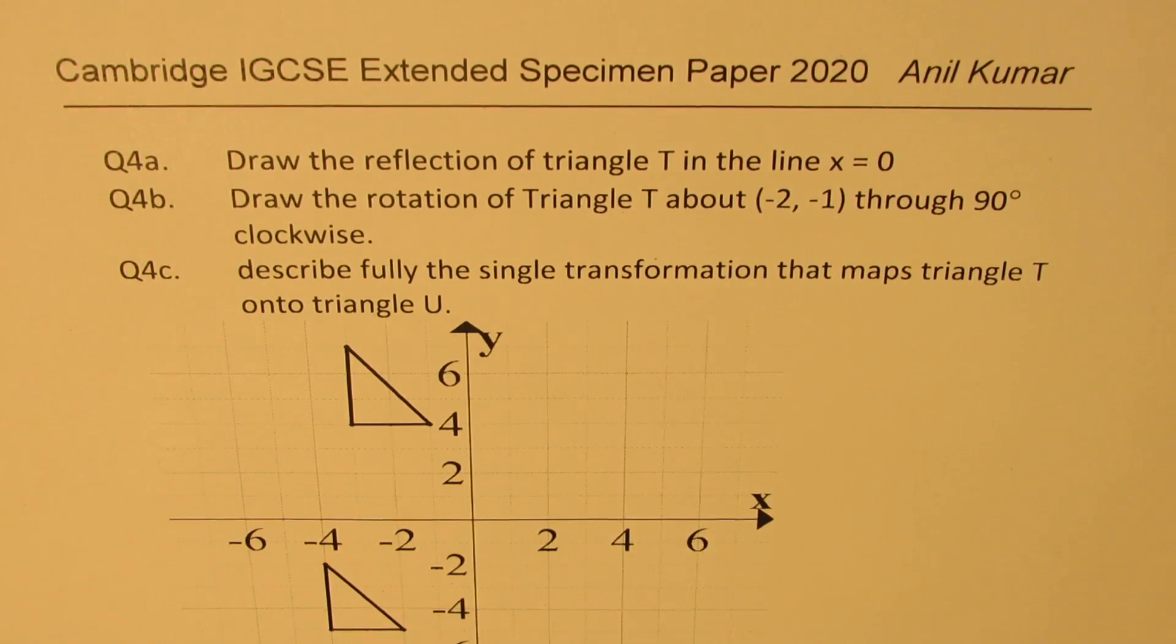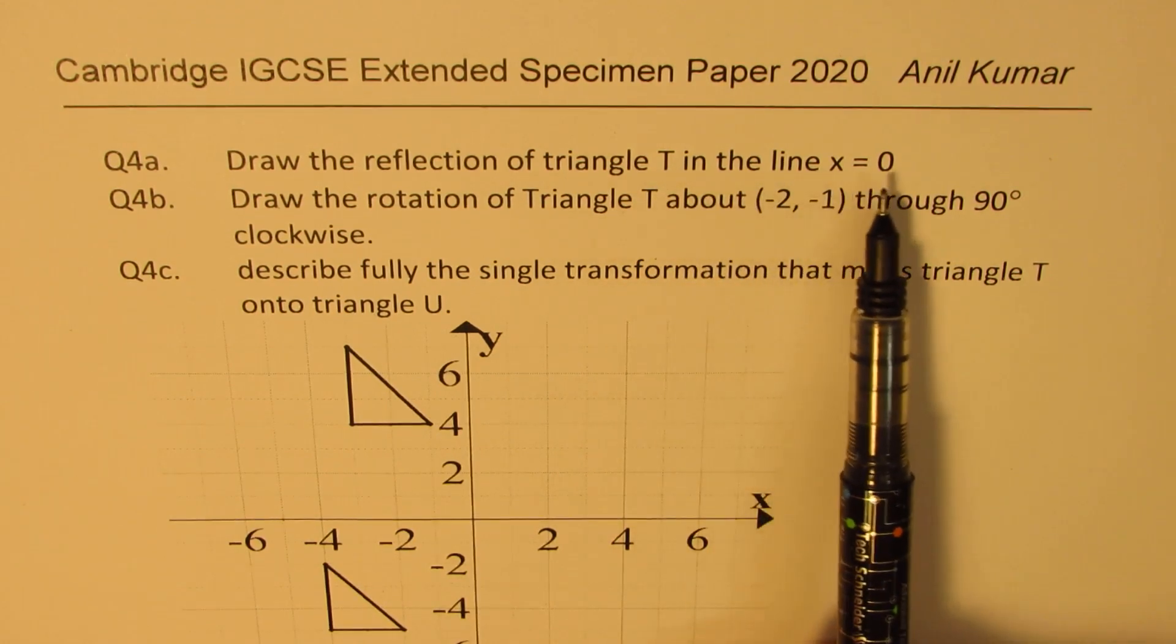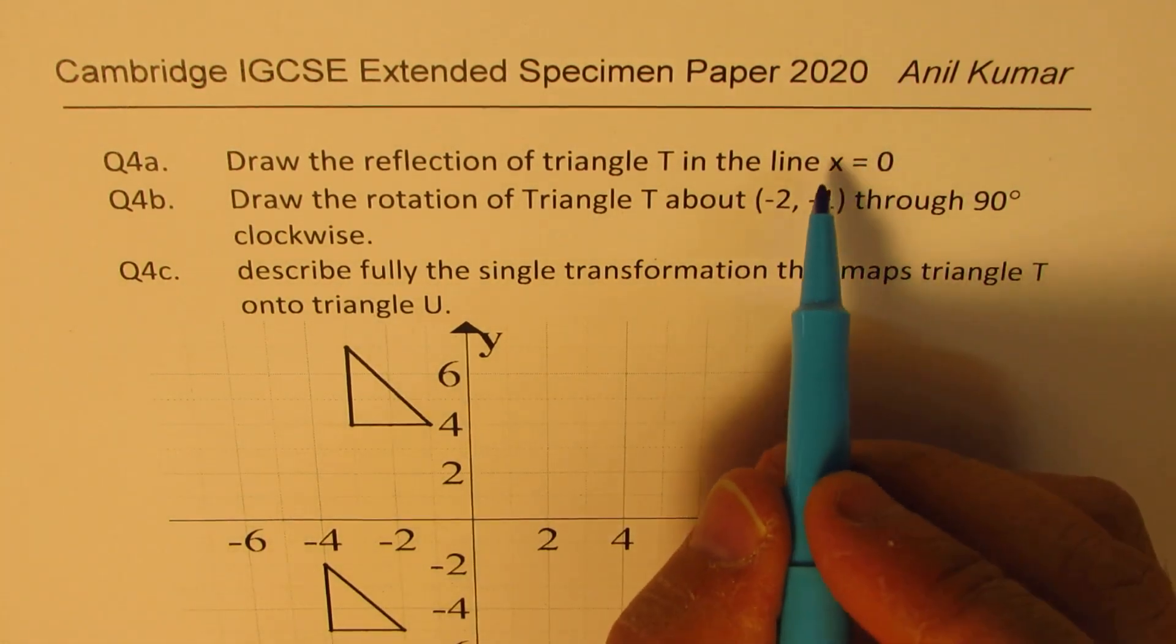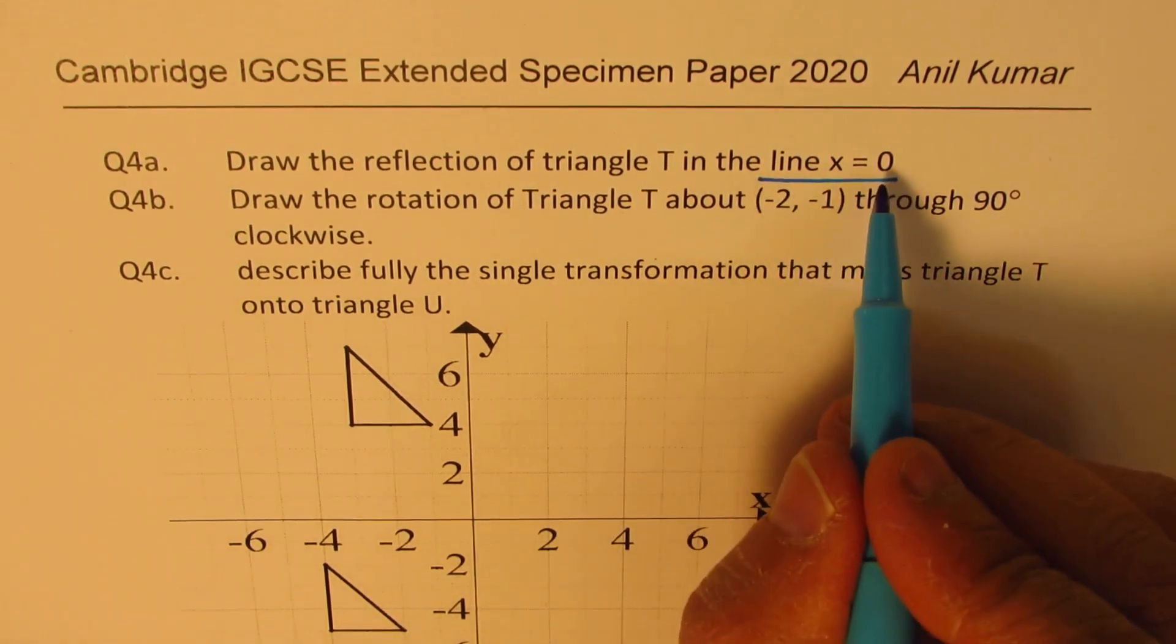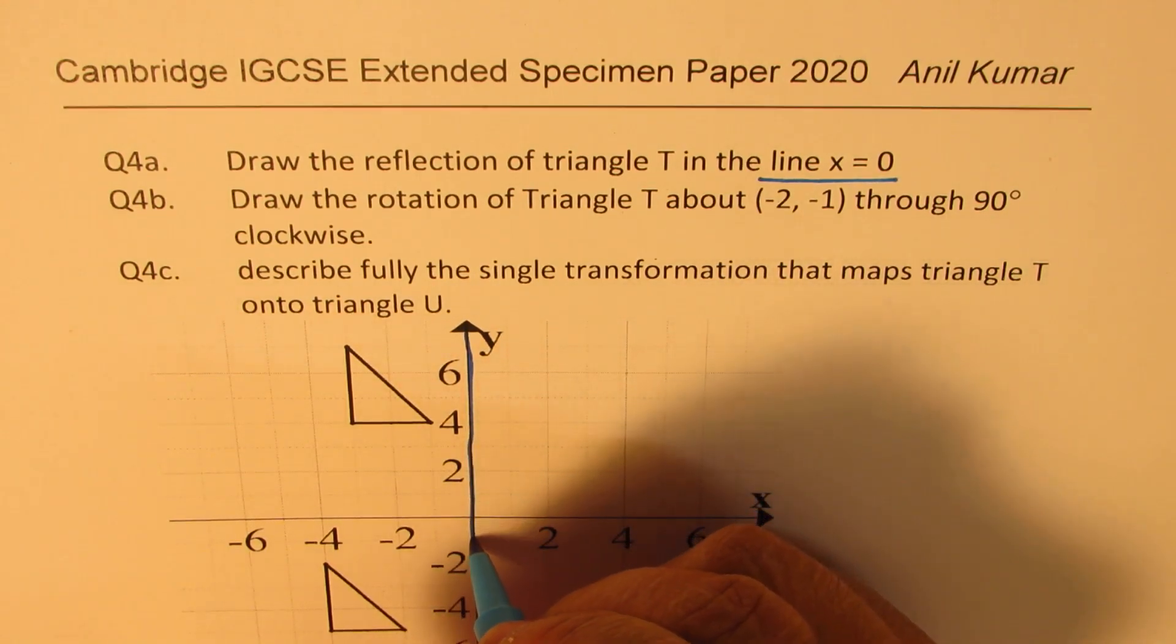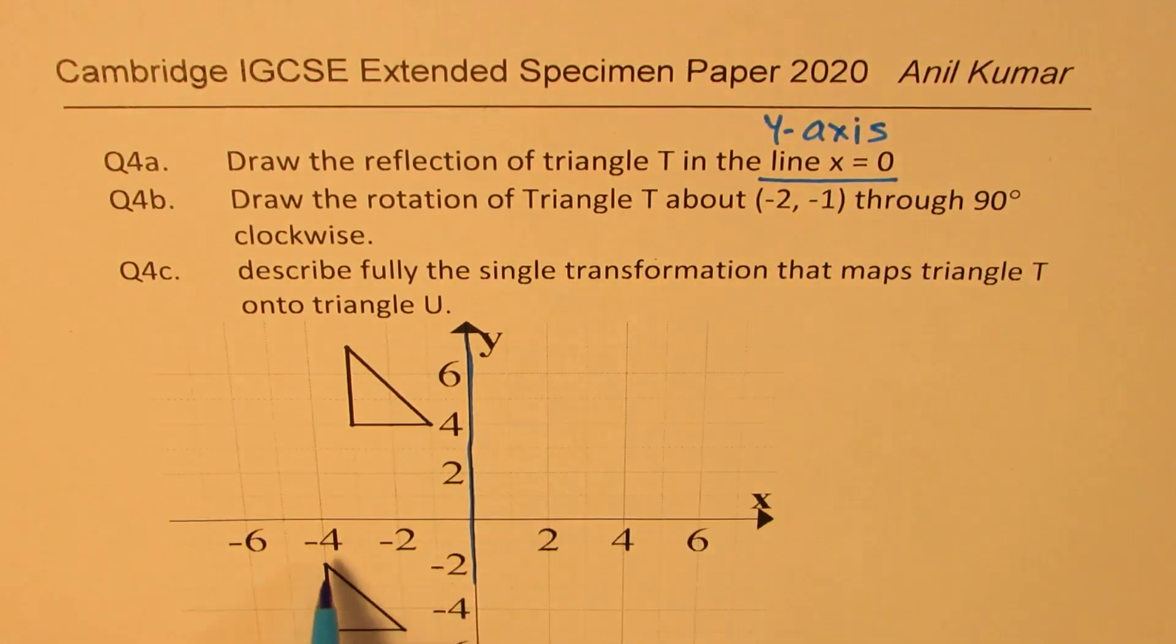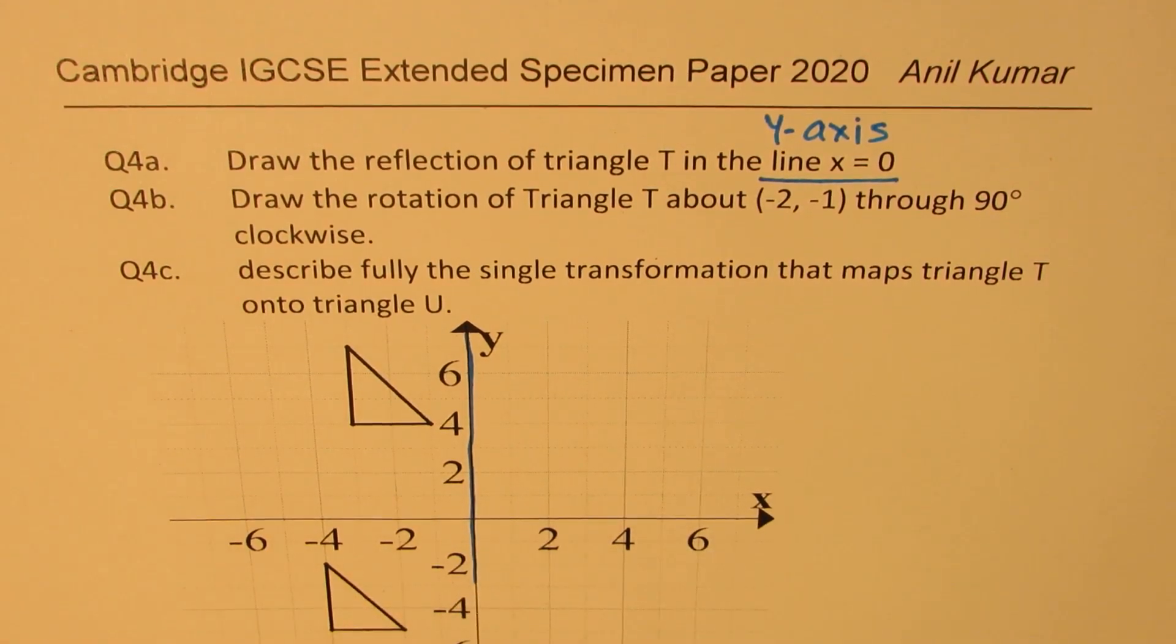Question number 4 says: draw the reflection of triangle T in the line x equals 0. Now, this first statement could create confusion for students. Some may not understand what is the meaning of line x equals 0. Line x equals 0 means the y-axis. This is what we're talking about. Every point on the y-axis has x equals 0. So that's the vertical line we are looking into.